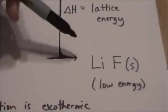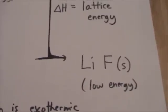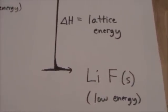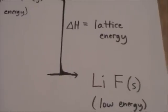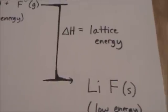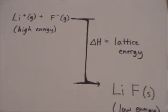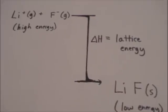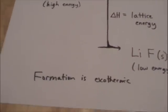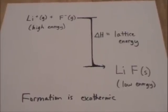If you go from the high energy cation and anion down to the lower energy lithium fluoride solid, that means it's compacted down into that solid crystal lattice. Now we've released energy, and that delta H, that lattice energy, from that release is just called the lattice energy, and it will be a negative delta H. Again, the formation of these ionic solids is exothermic.